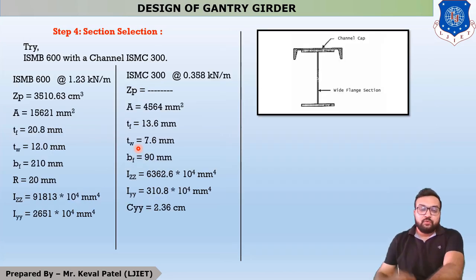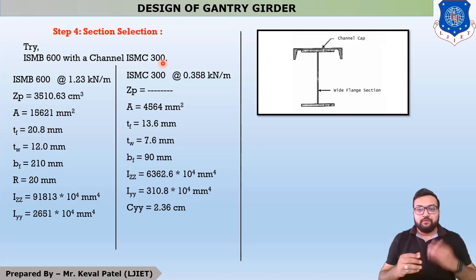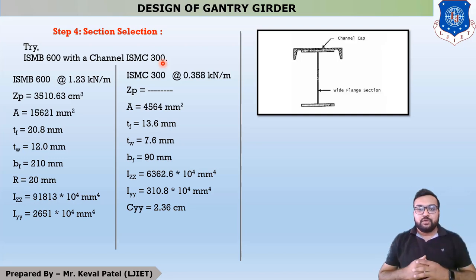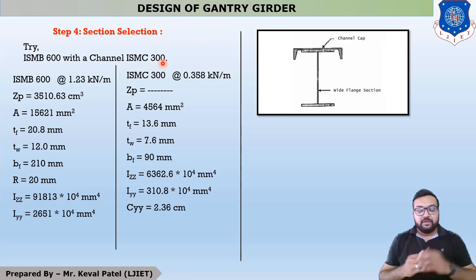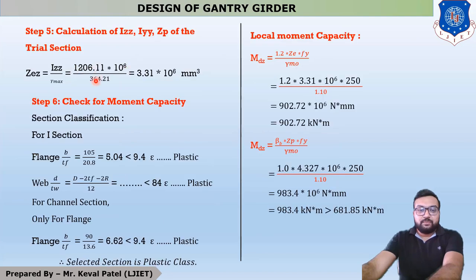In the last lecture, we tried ISMB600 with a channel section of ISMC300. When using only the I-section, the center of gravity (CG) is exactly at the center. But when you place the channel section on top of the flange, the CG moves upward. This value was found in our last lecture to be 364.21 mm. After that, we found the moment of inertia IXX and IYY for the combined section.